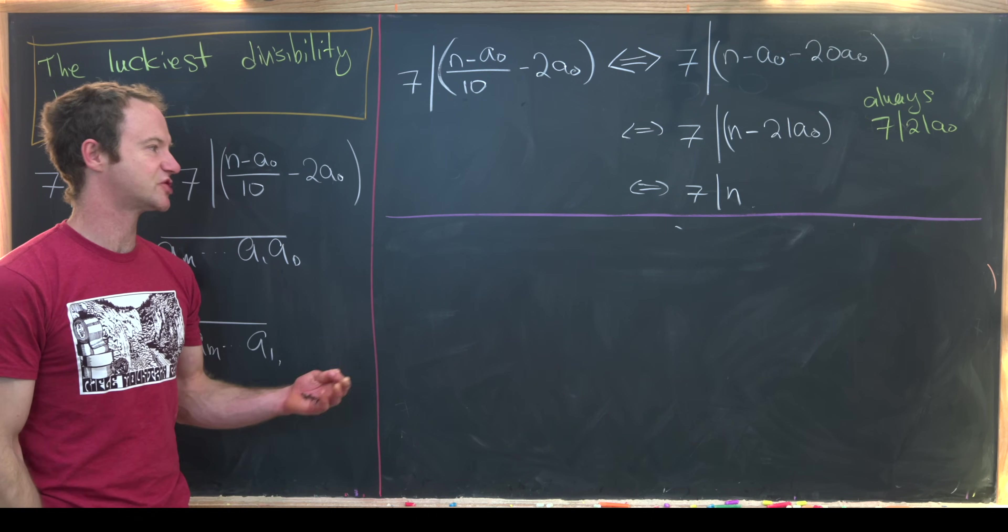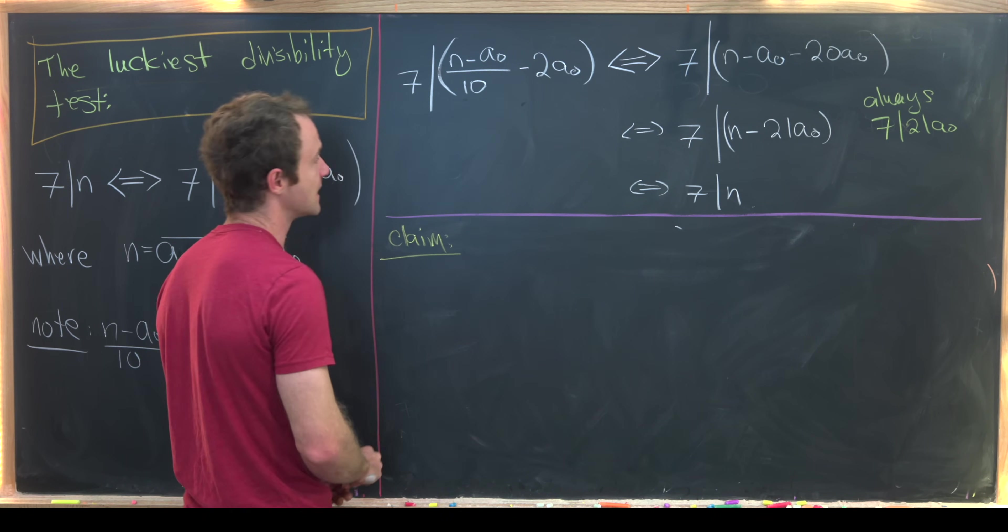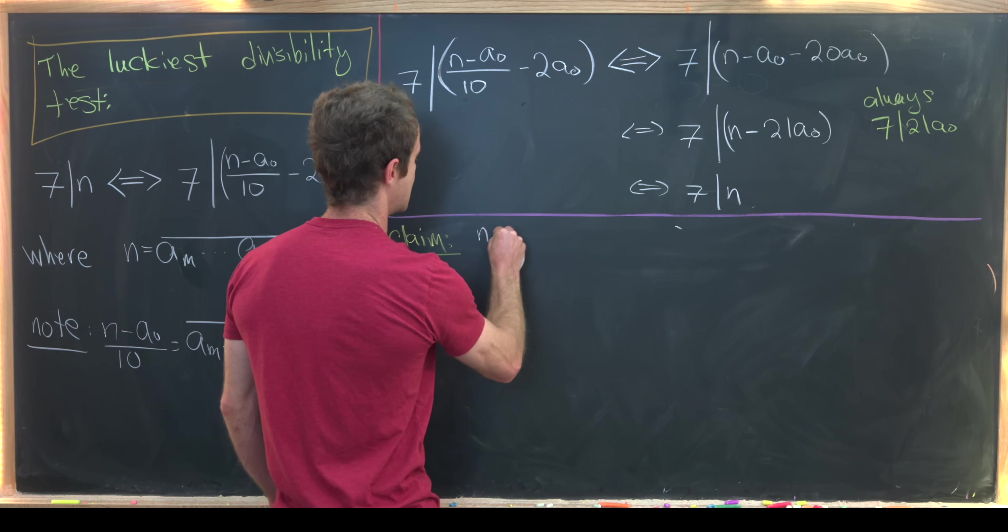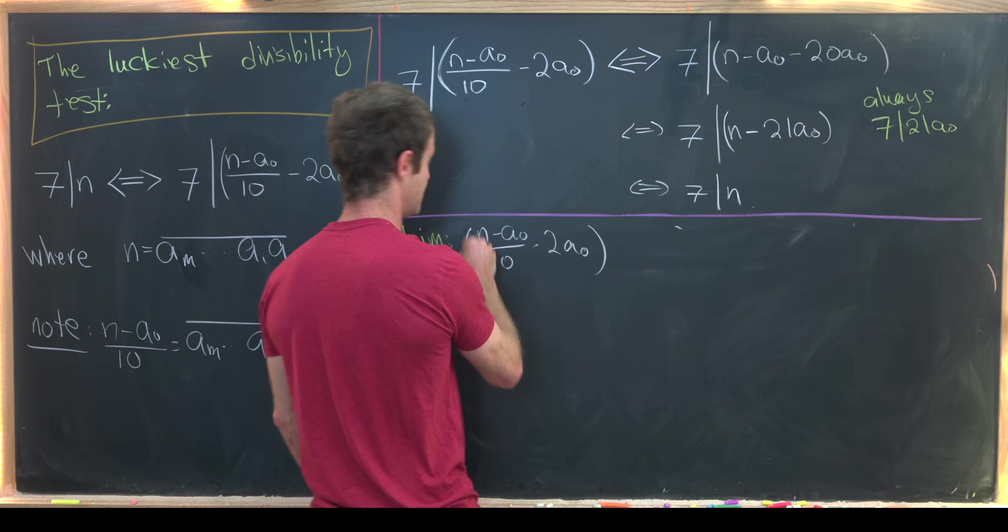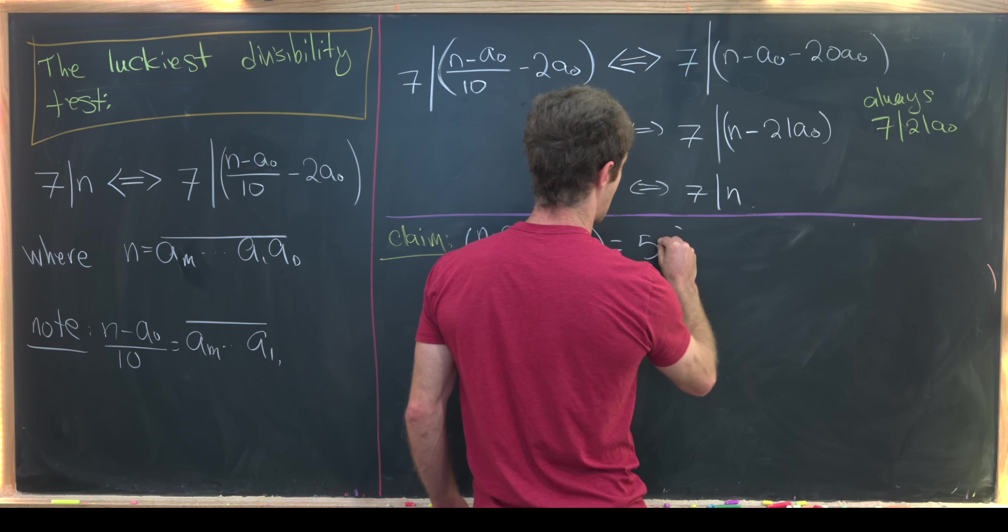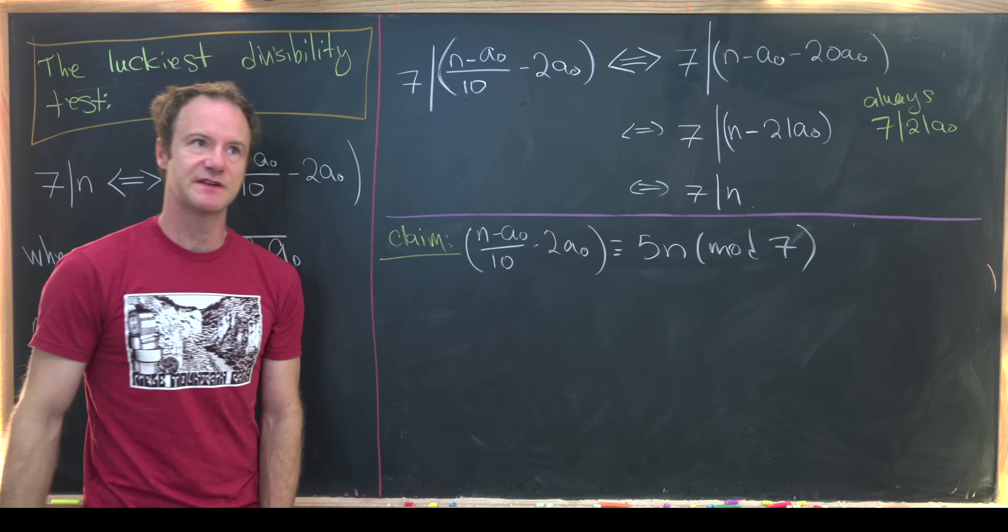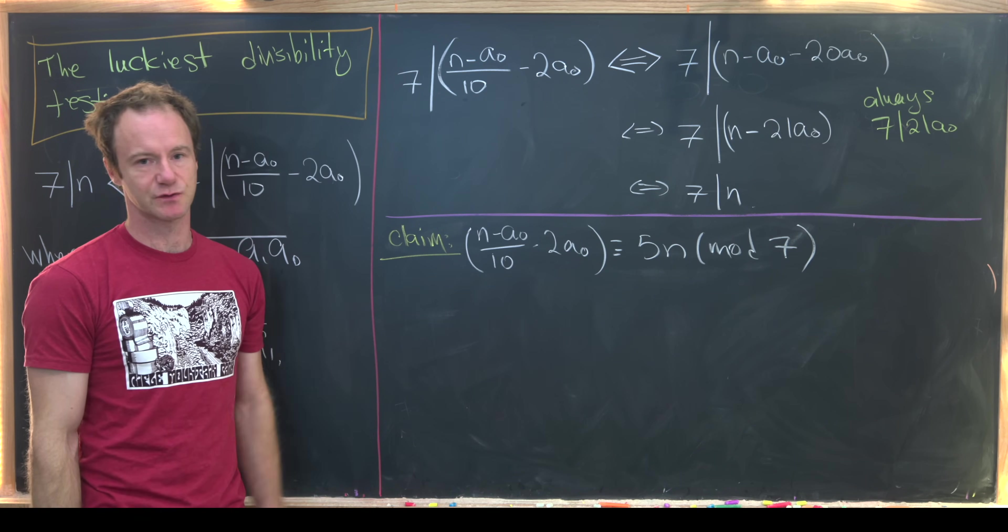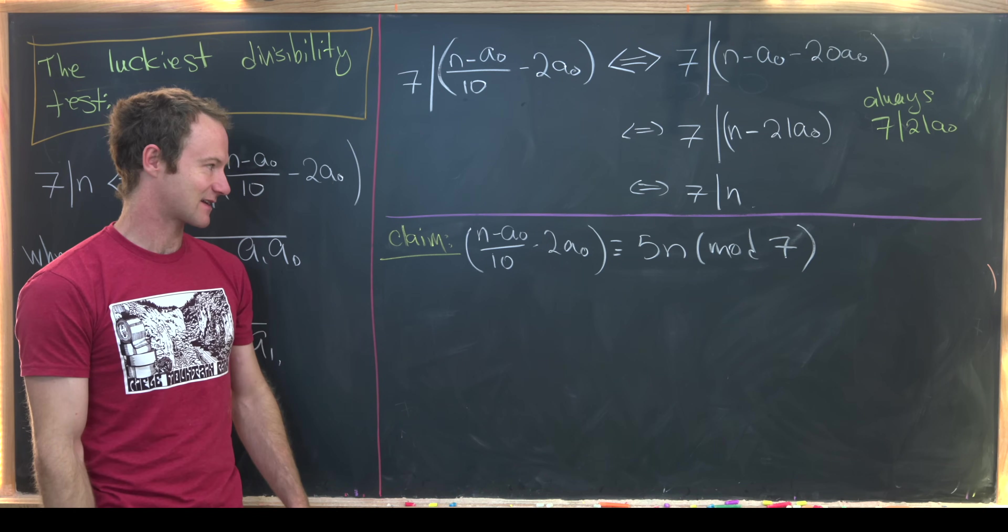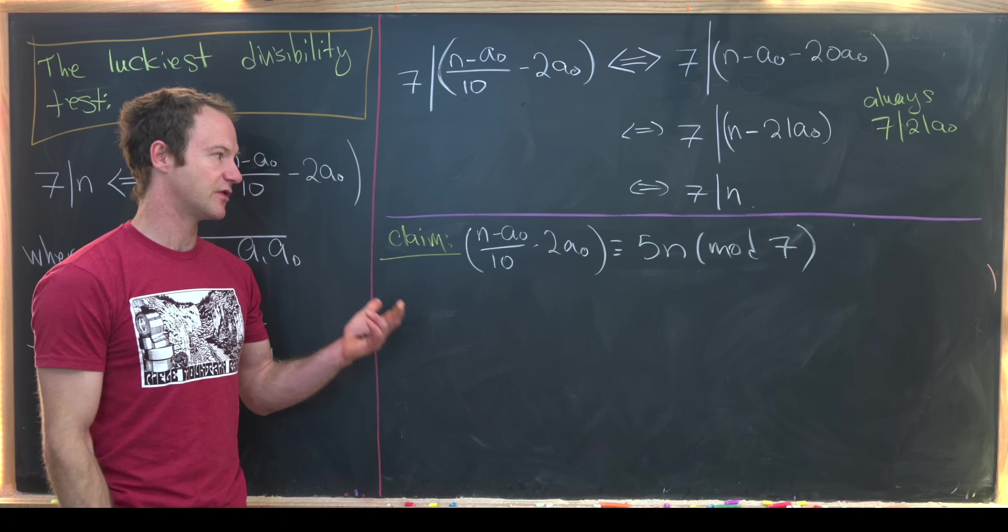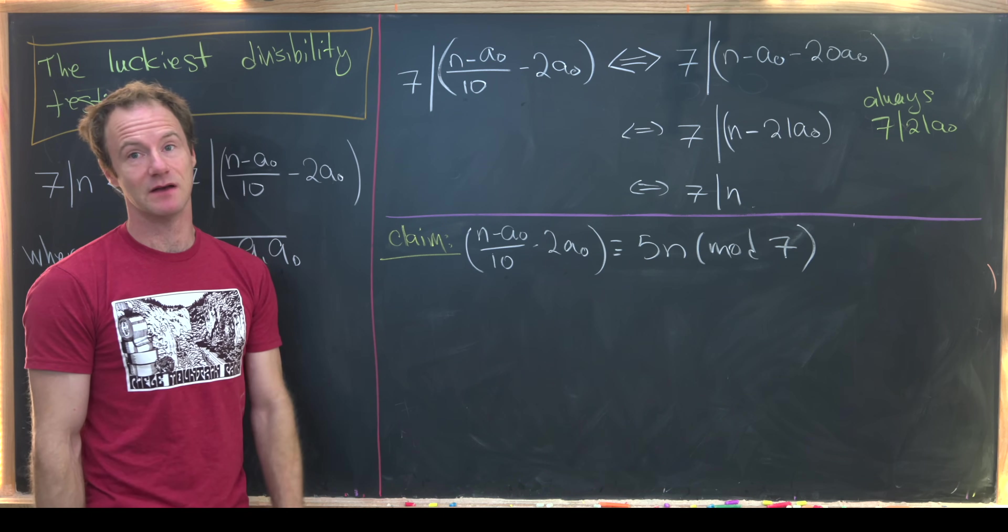So now we're going to prove a slightly stronger and more general statement. So I'll call that the following claim. And that is that (n - a_0)/10 - 2a_0 is congruent to 5n mod 7. So this is a little bit different than other divisibility tests when you're working with modular arithmetic because usually you keep the remainder exactly the same.